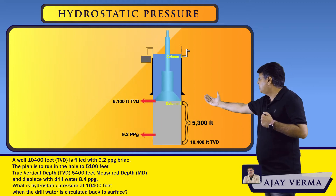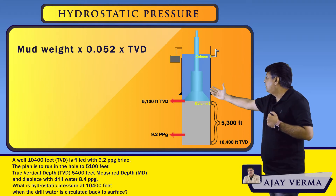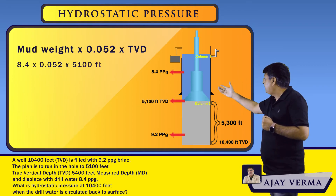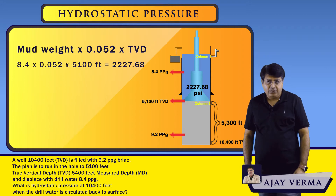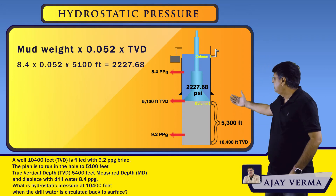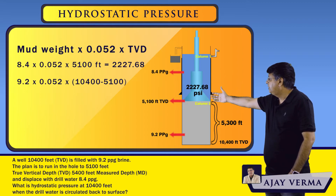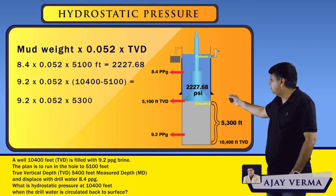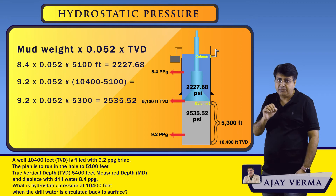The hydrostatic pressure formula is: mud weight × constant × TVD. For the first column, mud weight is 8.4 ppg and TVD is 5,100 feet, giving 2,227 psi. For the second column, the height is 5,300 feet, so the formula is 9.2 × constant × 5,300 feet, which gives 2,535 psi.